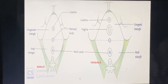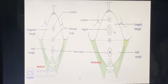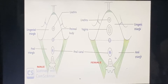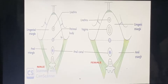In the perineum in both males and females: the urogenital triangle contains the urethral and vaginal openings in females, whereas in males it contains only the urethral opening. The anal triangle contains the anus in both males and females.